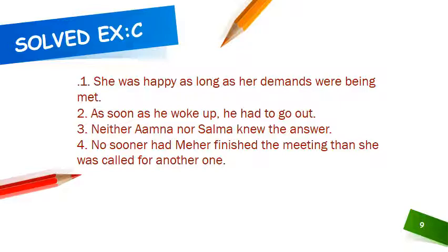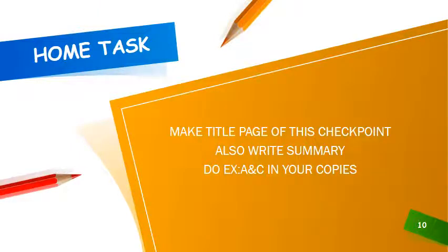First of all, you have to solve exercise A and C. Write down the summary, then do exercise A and C in your copies. I want neat and clean work with proper formation, and also give space after every word. This is your home task: make the title page of this checkpoint 3, write the summary below that, write the name of the checkpoint, do exercise A and C in your copies, maintain your indexes, mention the date on the top of your pages, and then solve exercise A then exercise C with the proper questions.